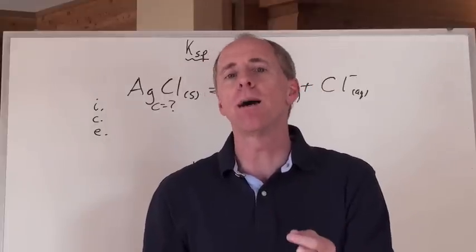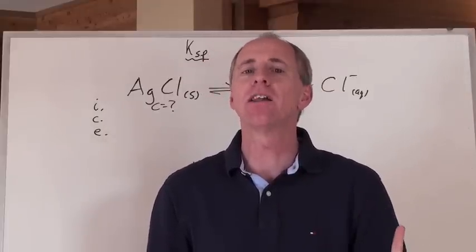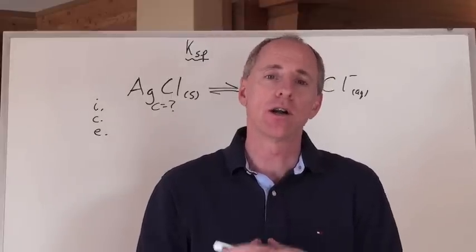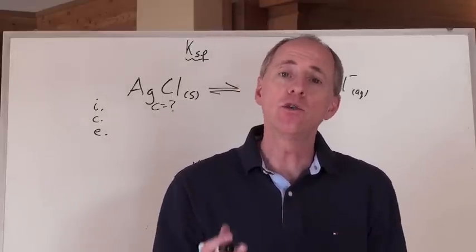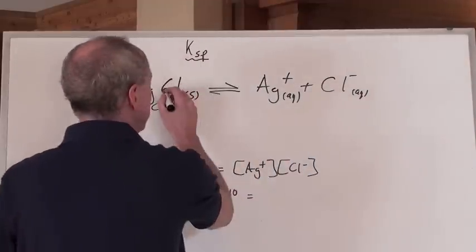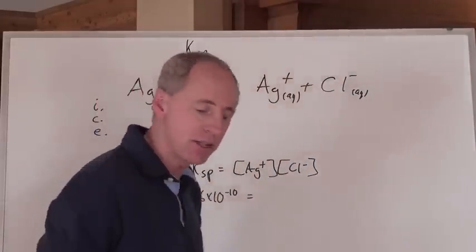Well, you can look up the Ksp value for that equilibrium reaction in a data booklet or a Ksp chart, and you can find that the Ksp for AgCl is 1.6 times 10 to the negative 10.